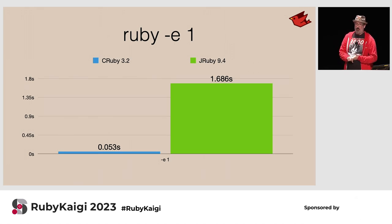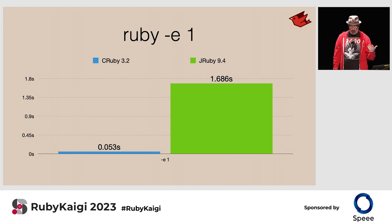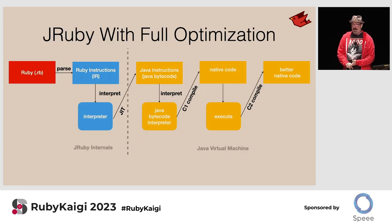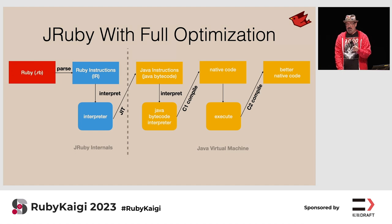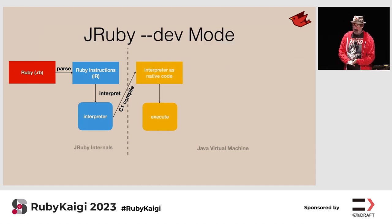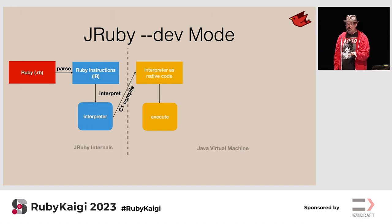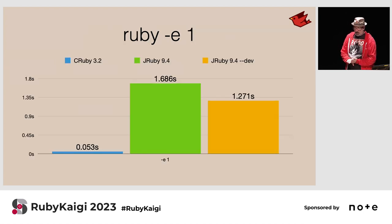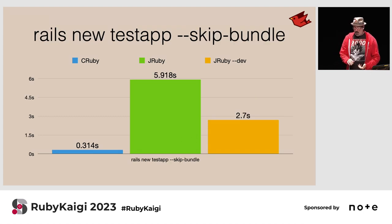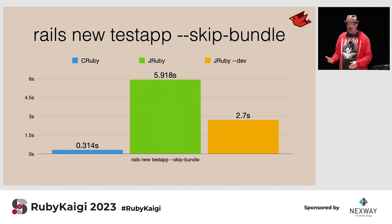What this adds up to is significantly slower startup: a hello world command takes over one and a half seconds where CRuby does it in 53 milliseconds. One of the first ways we've been tackling this is to simply do less optimization and get to a final stage more quickly — that's where JRuby's dev mode comes in. You can pass --dev to JRuby; it cuts out our JIT and tunes the JVM's JIT to be less aggressive. It gives about 25% improvement on hello world, and over 50% improvement on longer commands like generating a new Rails application.